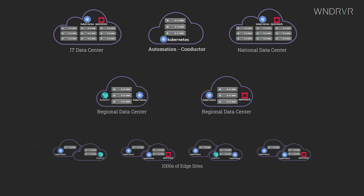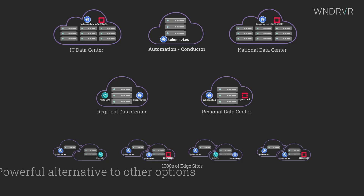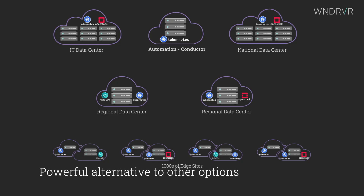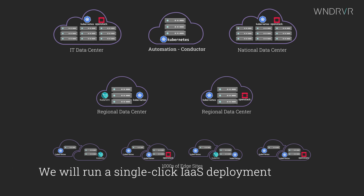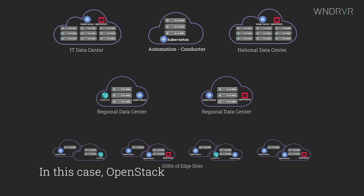Let's take a look at a complex, geo-distributed network with a variety of core and edge sites. The Cloud Platform stack is easy to deploy and a powerful alternative to other options. We'll run a single-click Infrastructure-as-a-Service deployment — in this case, OpenStack.